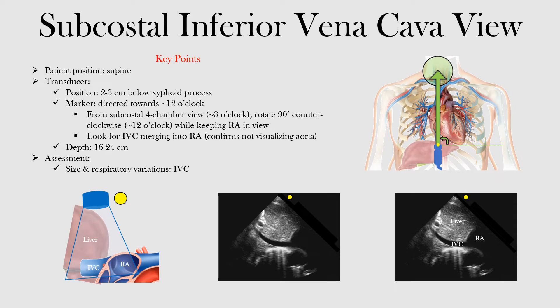In the subcostal inferior vena cava view, we're transitioning from the four-chamber view. We have the patient in the supine position, and we take the transducer, positioned two to three centimeters below the xiphoid process, and direct it towards the patient's left shoulder.